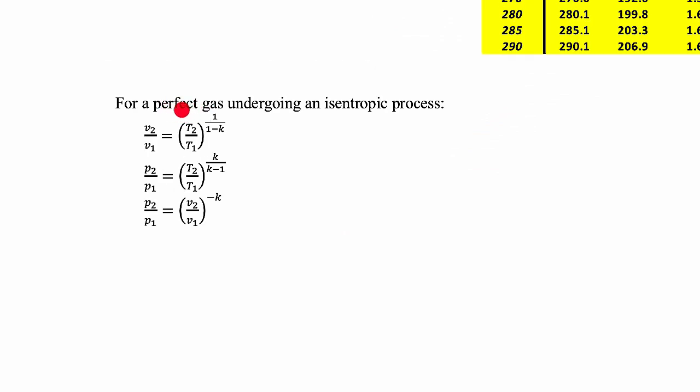Perfect gas undergoing an isentropic process. And then we get these expressions. These are given in your formula sheet, you know, the exam formula sheet. Just relate specific volumes and temperatures, pressures, temperature, pressure, specific volume. Just gives a relationship between all of those quantities. The K here is the specific heat ratio, which is the CP over CV. Again, this one is specifically for a perfect gas.